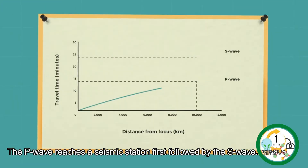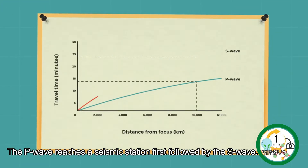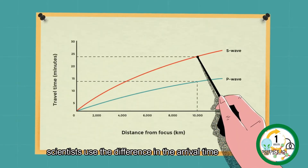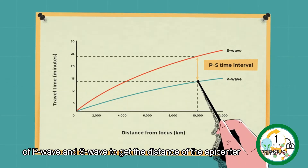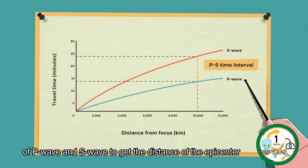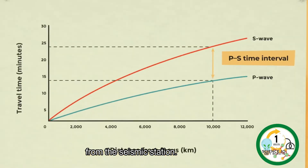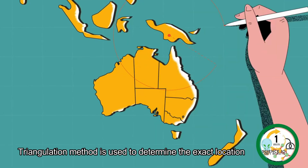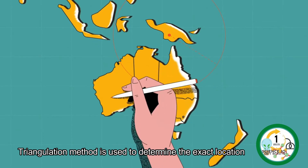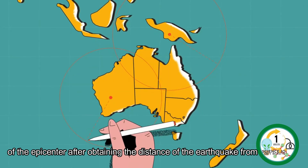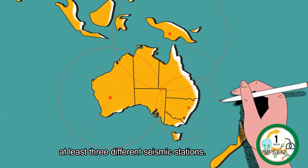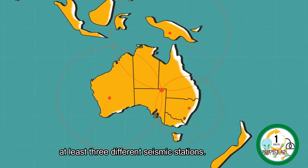The P wave reaches a seismic station first, followed by the S wave. To locate the epicenter of an earthquake, scientists use the difference in the arrival time of the P wave and S wave to get the distance of the epicenter from the seismic station. The triangulation method is used to determine the exact location of the epicenter after obtaining the distance of the earthquake from at least three different seismic stations.